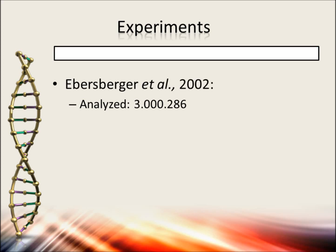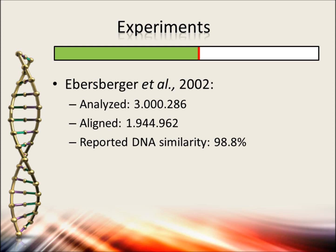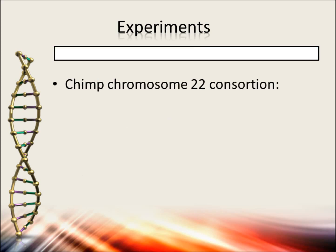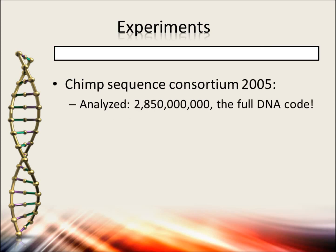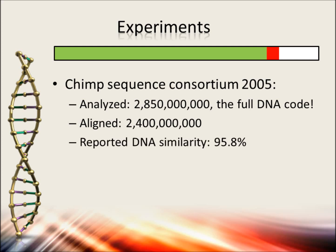Ebersberger et al. in the same year analyzed over 3 million base pairs, got almost 2 million of them aligned, and reported 98.8% similarity — but apparently 35% was too different to align. The chromosome 22 consortium reported 98.5% DNA similarity, and the amount of removed data was between 15 to 20% of the investigated genome. In 2005, scientists managed to analyze 2.8 billion base pairs — actually the entire genome of the human and chimp. They got 2.4 billion base pairs aligned and reported a similarity of 95.8%, but again 60% was too different to align and thus removed before analysis.